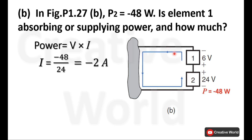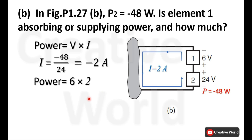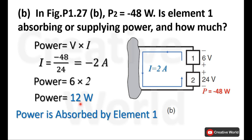Our final current direction through this circuit is now established. Collecting data for the calculation of power of element 1: we have voltage across this element and current as well — current is 2 amperes. Multiplying the voltage of element 1 by the current through element 1, the power will be 12 watts. Because this power is positive, we take it as power being absorbed by element 1.